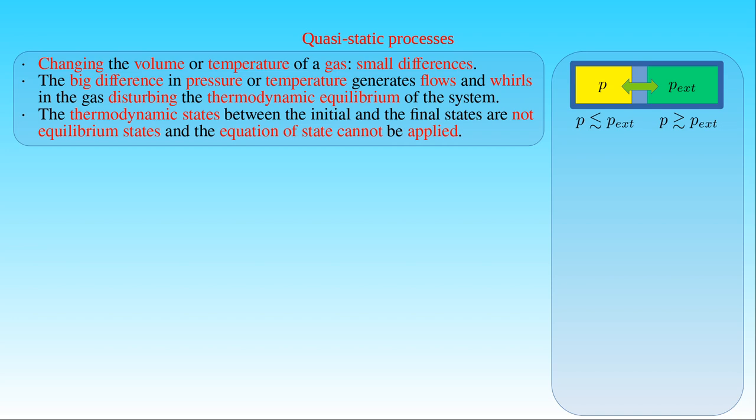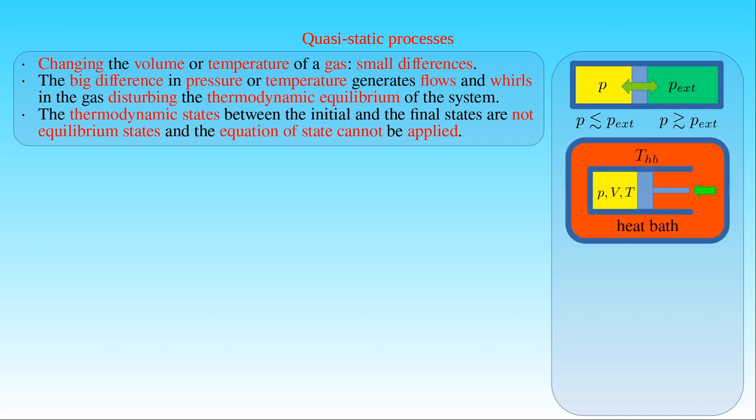We also assume that the temperature of a thermal reservoir or a heat bath and that of a thermodynamic system in contact with the heat bath are almost the same for similar reasons. If the difference between the temperature T_HB of the heat bath and the temperature T of the substance in the system is infinitesimal, whether we warm or cool the system, then the thermal gradient between the system and its surroundings is small enough to not produce any convective flow in the gas disturbing its equilibrium.